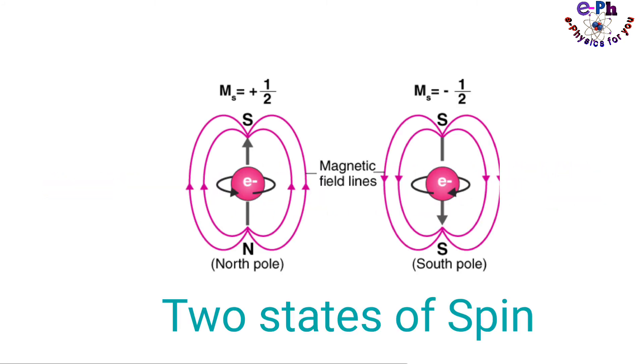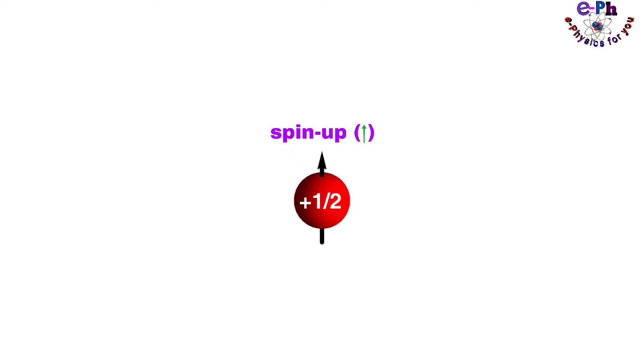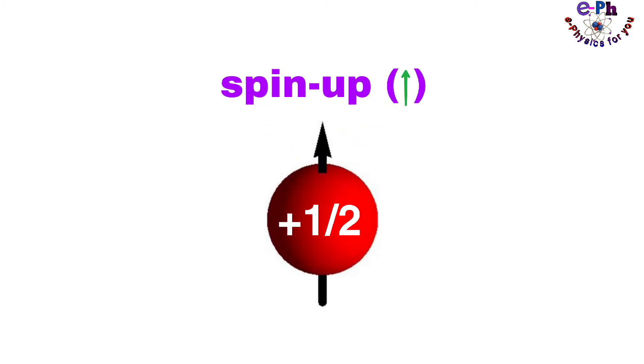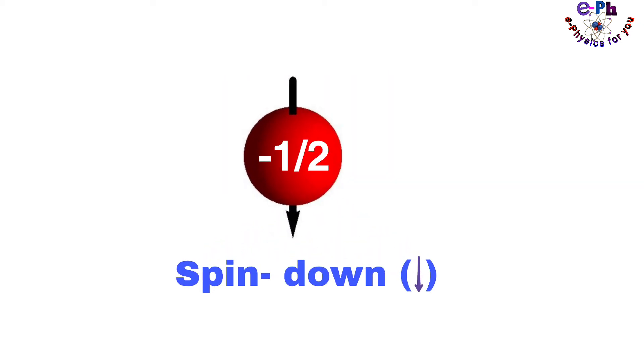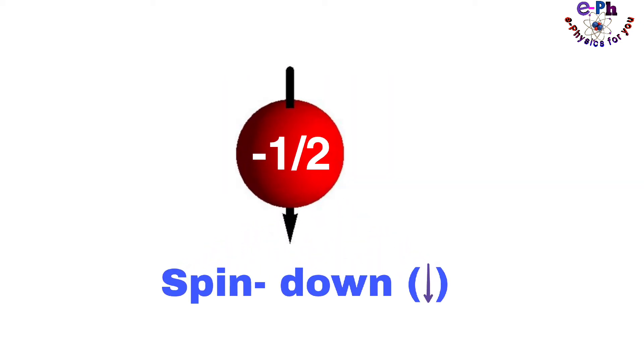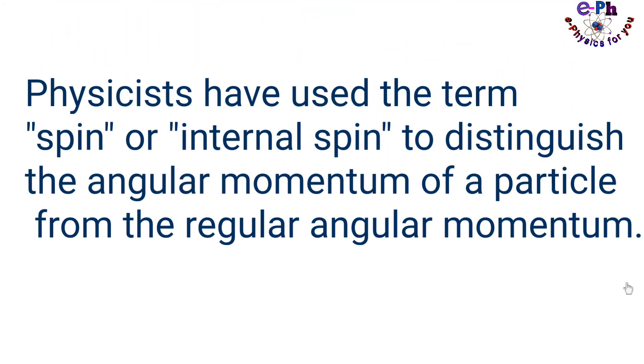Electrons have spin half, so they can have only two spin states: one of them will be spin up or plus half, and the other will be spin down or minus half.